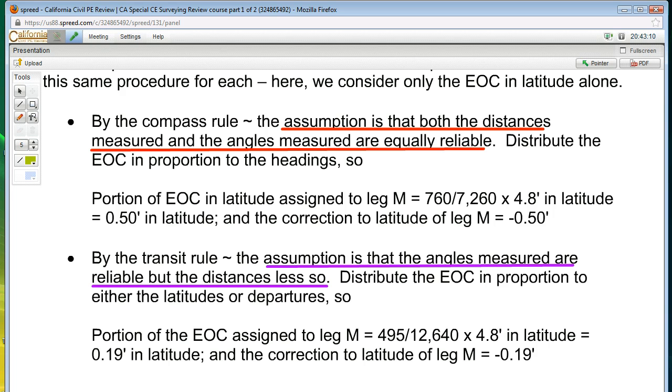All right. So that's done. So then let's take a look at the actual methods. How do you compute them? Well, for the compass rule, you have to distribute the error of closure in proportion to the headings. Now remember a heading is the leg distance.